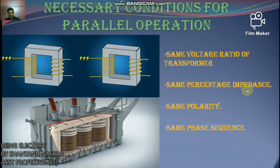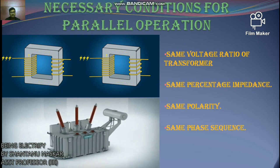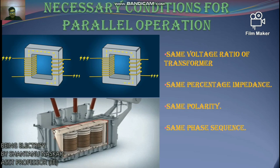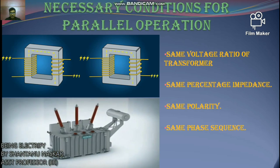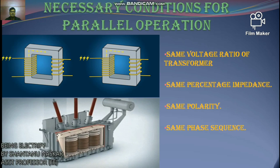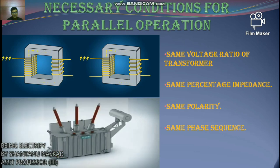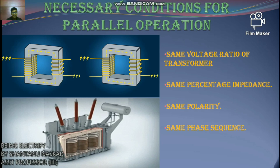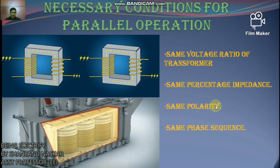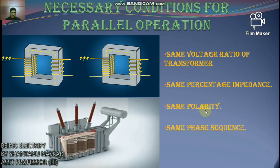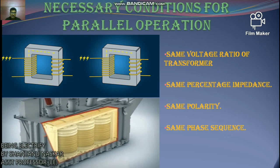Number two: same percentage impedance. The current shared by two transformers running in parallel should be proportional to their MVA ratings. Current carried by each transformer is inversely proportional to its internal impedance. Therefore, the impedance of transformers running in parallel should be inversely proportional to their ratings, meaning percentage impedance or per-unit impedance values should be identical for all parallel transformers. Number three: same polarity. The polarity of all parallel transformers should be the same; otherwise, a huge circulating current will flow.